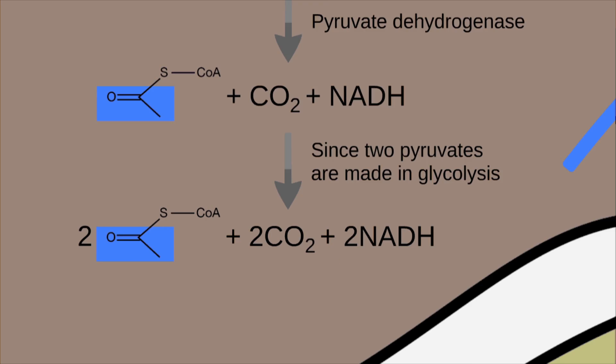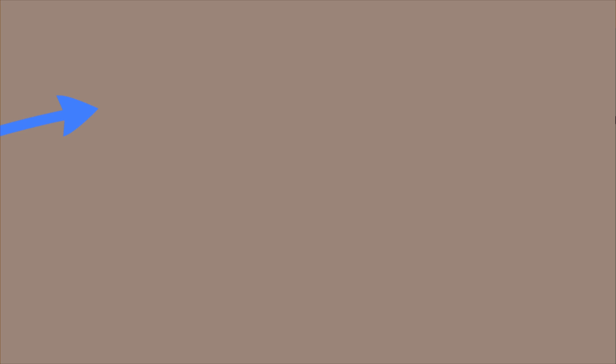The acetyl CoA molecules then proceed to the citric acid cycle, also known as the Krebs cycle, which also occurs in the mitochondrial matrix. At the beginning of the cycle, acetyl CoA loses its acetyl group to a four-carbon compound called oxaloacetate, producing a six-carbon citrate, hence the name citric acid cycle.